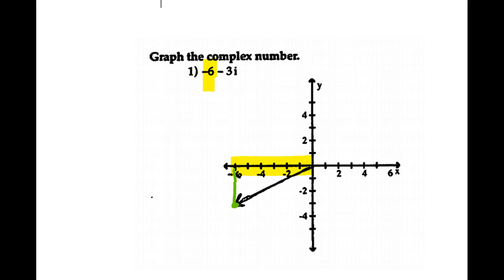We end up right here, and I can draw my vector emanating from the origin. That's what the complex number negative 6 minus 3i looks like graphed.